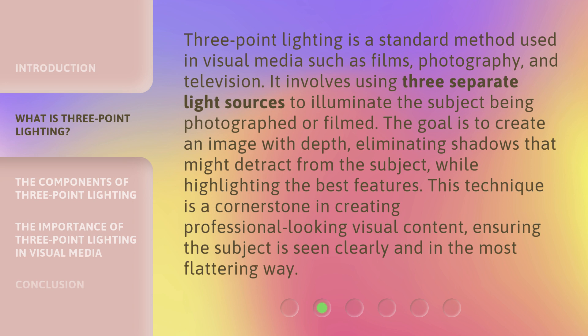Three-point lighting is a standard method used in visual media such as films, photography, and television. It involves using three separate light sources to illuminate the subject being photographed or filmed. The goal is to create an image with depth, eliminating shadows that might detract from the subject, while highlighting the best features. This technique is a cornerstone in creating professional-looking visual content, ensuring the subject is seen clearly and in the most flattering way.